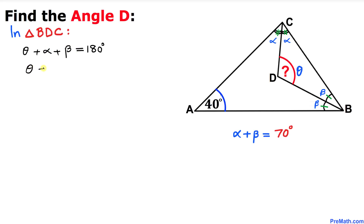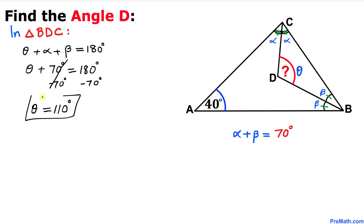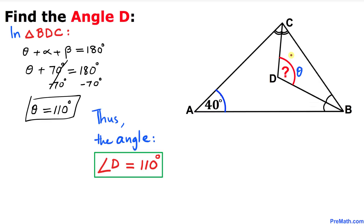Substituting, we get theta plus 70 degrees equals 180 degrees. Subtracting 70 degrees from both sides, theta turns out to be 110 degrees. So angle D equals 110 degrees — that's our final answer. Thanks for watching and please don't forget to subscribe to my channel for more exciting videos.